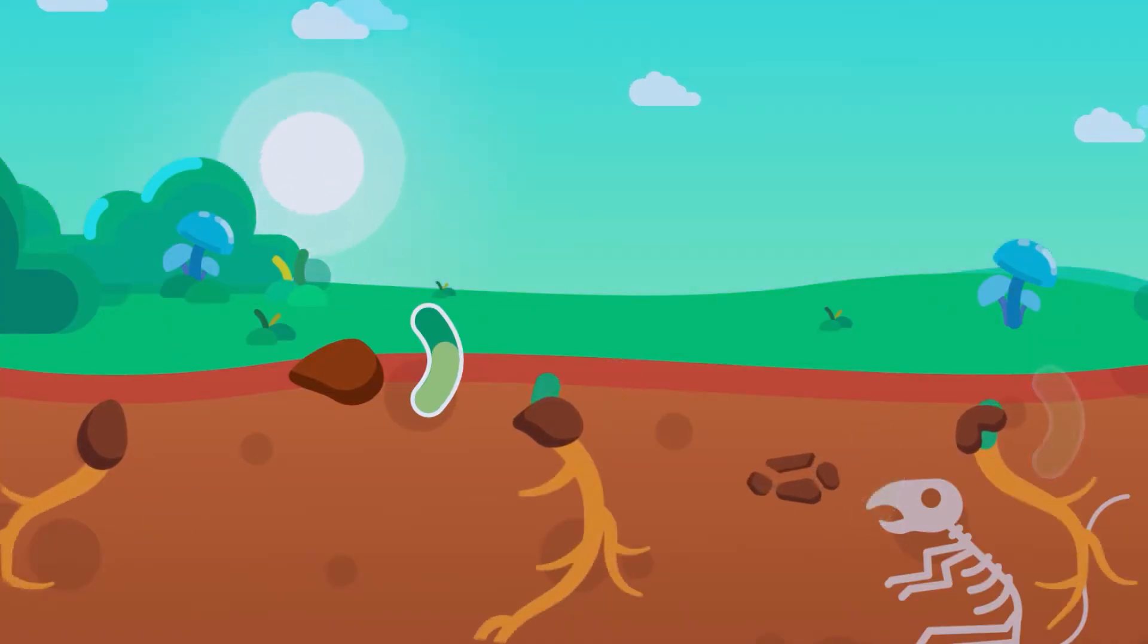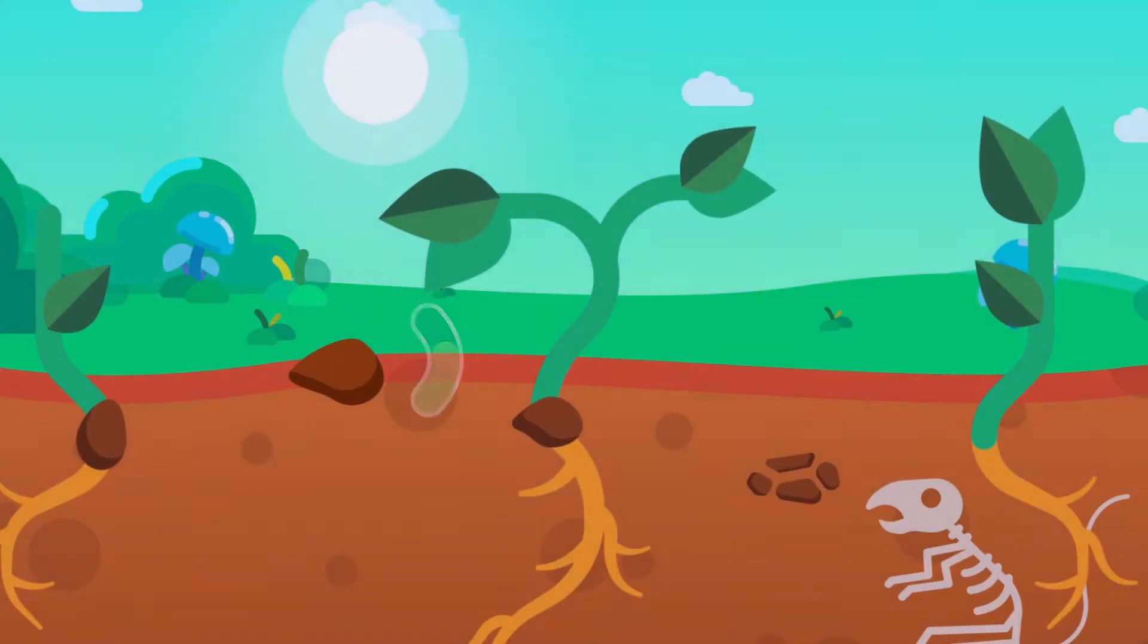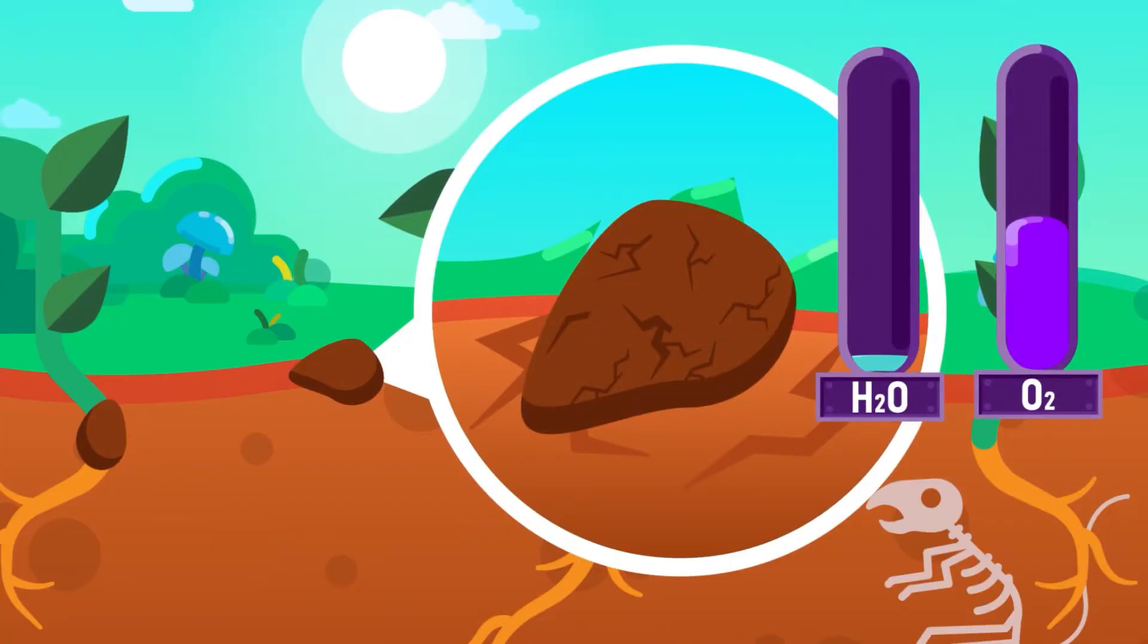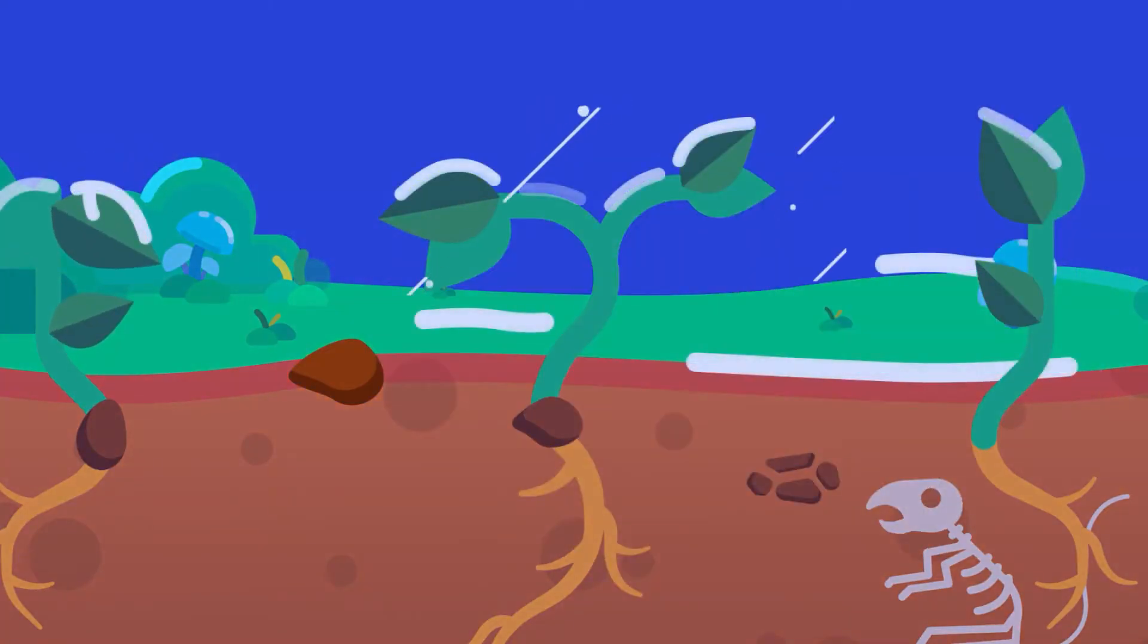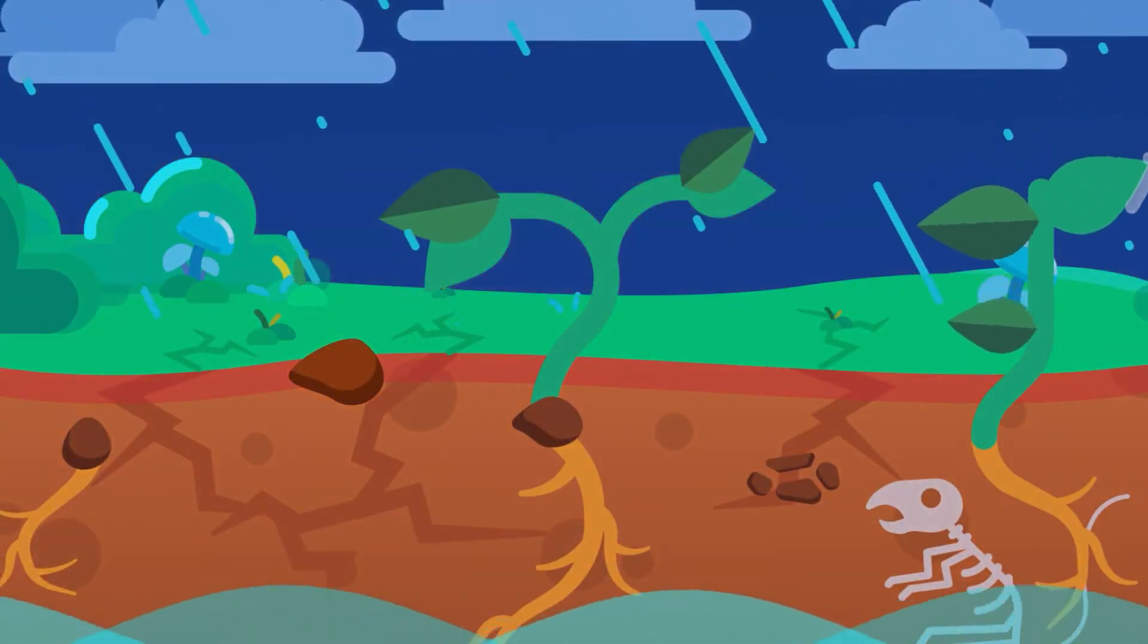The dormant period may be days, weeks, or even years, depending on the species. Dormant seeds are usually dry and their vital activities are much reduced. They respire anaerobically. They are able to withstand harsh environmental conditions, such as very cold or very hot weather, allowing them to survive longer in unfavorable seasons.